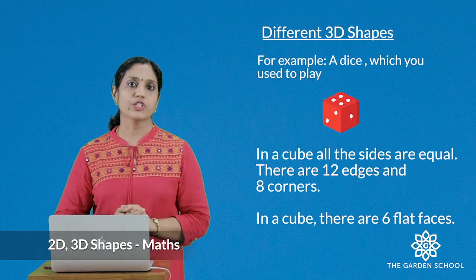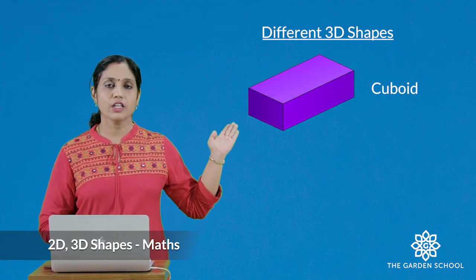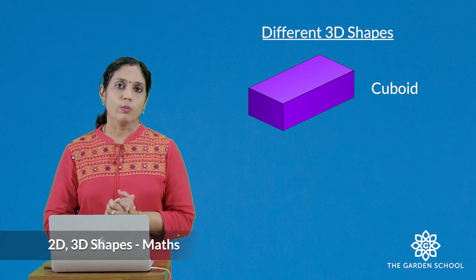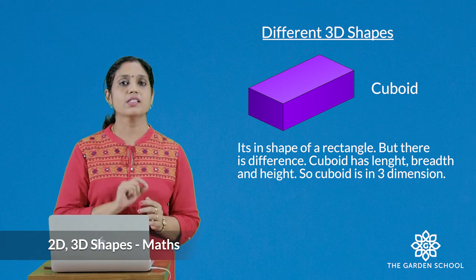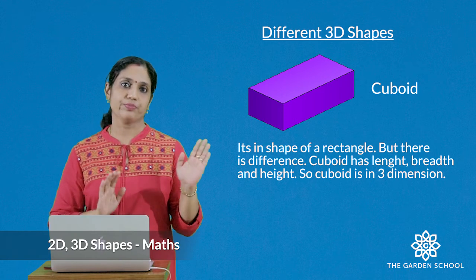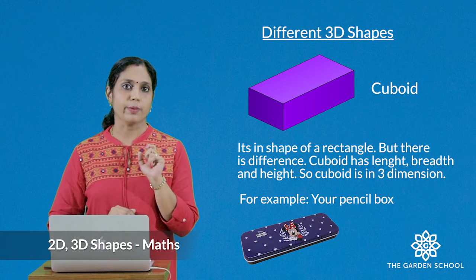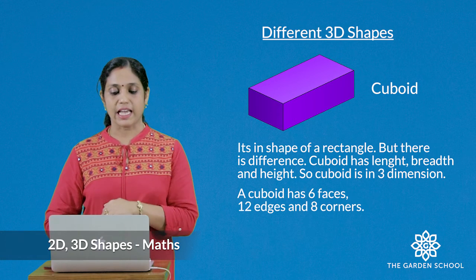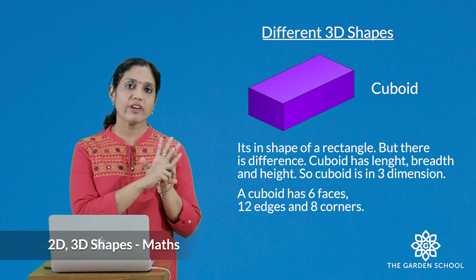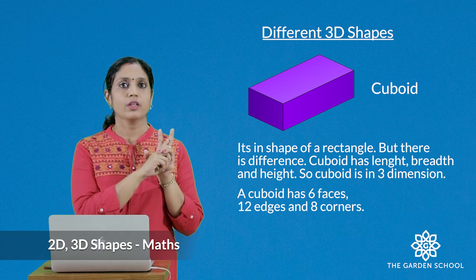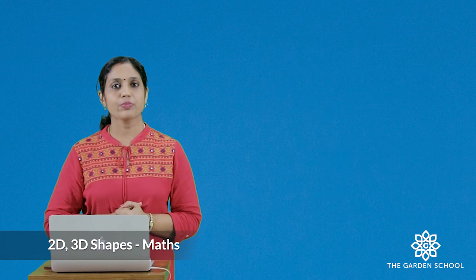Now we move on to cuboid. A cuboid is in the shape of a rectangle, but the difference is that it has length, breadth, and height — so it is a 3D shape. For example, your pencil box is cuboid in shape. Like a cube, a cuboid also has six faces, 12 edges, and eight corners. Hope you are clear with the 2D and 3D shapes. That's all for today — we'll meet next time, thank you!